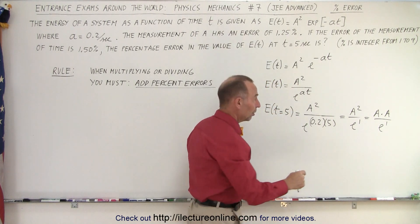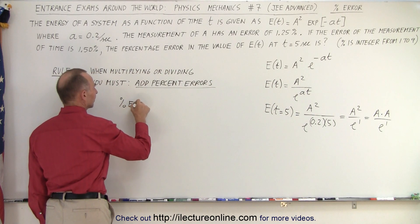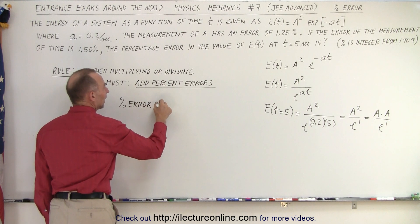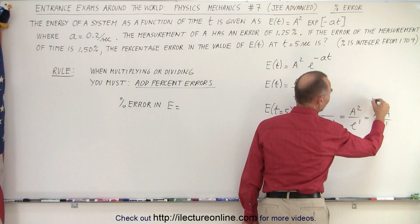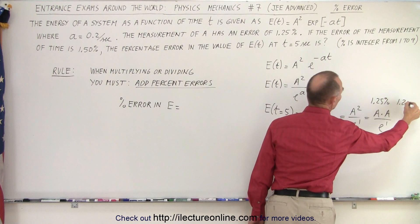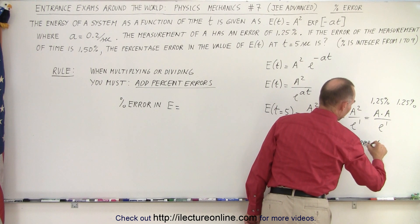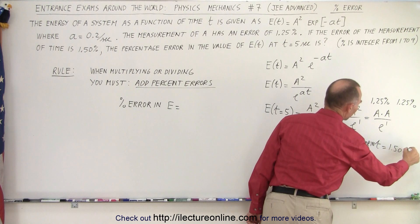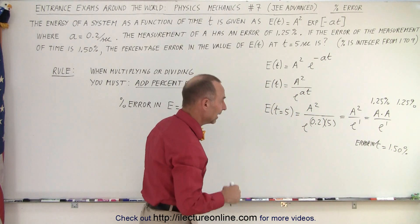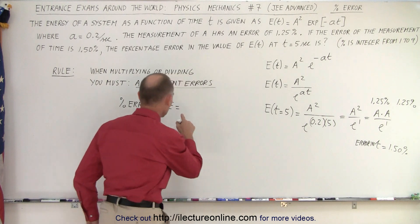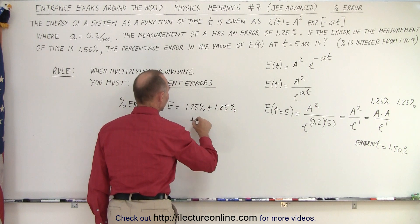Notice that we have a multiplication and a division, which means the percent error in E equals the percent error from each factor. We have 1.25 percent from the first a, 1.25 percent from the second a, and then a question mark for the contribution from t — since the error in t is 1.50 percent.